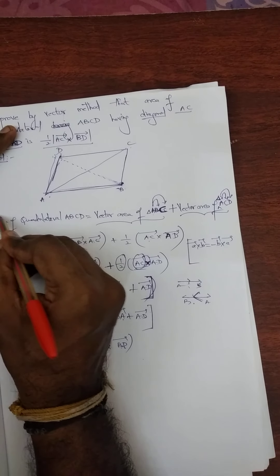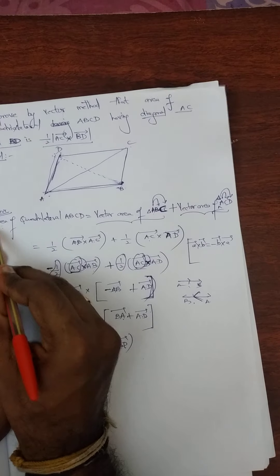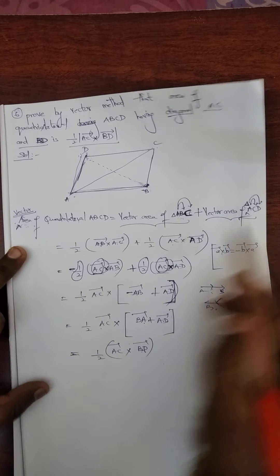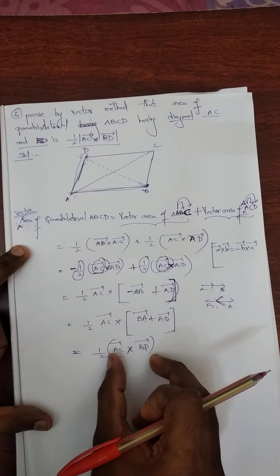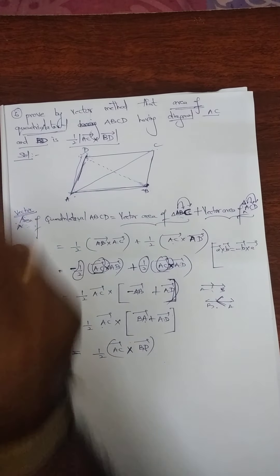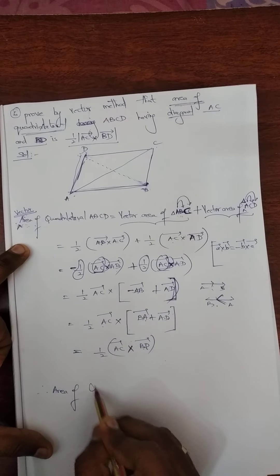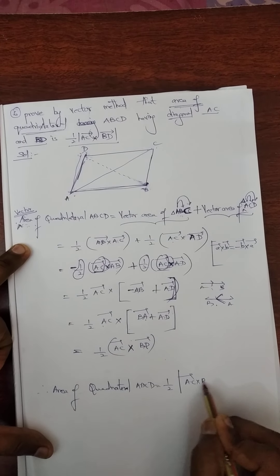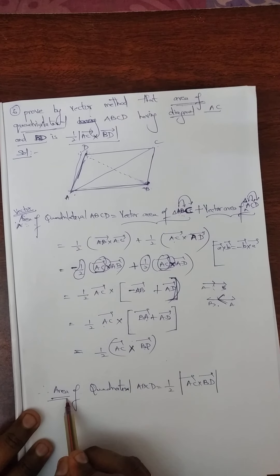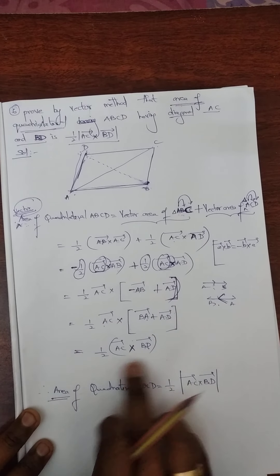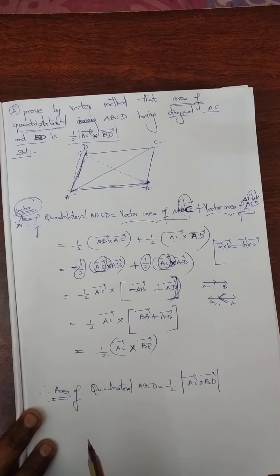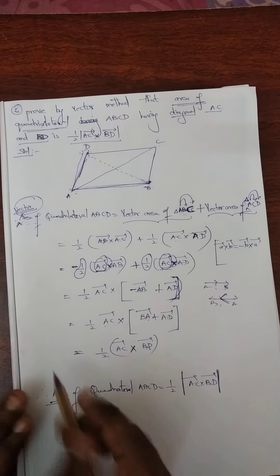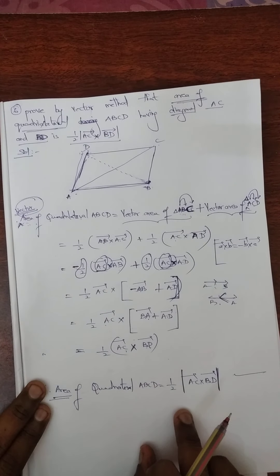This is vector area — not area, I want to write vector area. Listen students, I missed one word here. This is vector area of quadrilateral ABCD equals vector area of triangle ABC plus vector area of triangle ACD. This is vector area. What they are asking? They are asking area alone. Therefore, area of quadrilateral ABCD is equal to nothing but 1/2 modulus of AC vector cross BD vector. If I need area, I need to put modulus. This is vector area of quadrilateral ABCD, and this is area of quadrilateral ABCD.